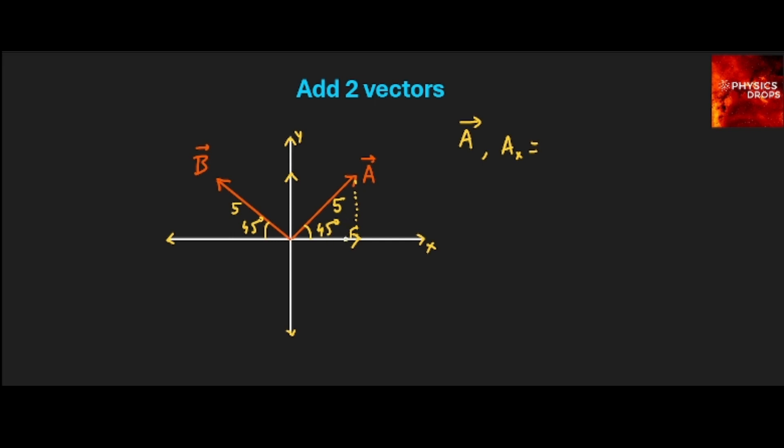The x will be cos 45, so it will be on the adjacent side of the right angle triangle, so it will be A cos 45. And the y component of A, Ay will be A sin 45, because it is on the opposite side of the right angle triangle.